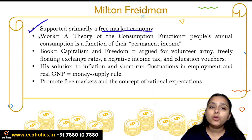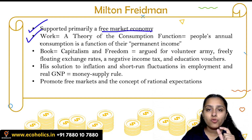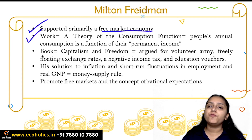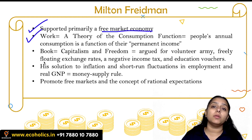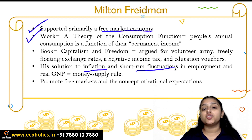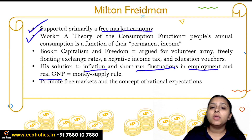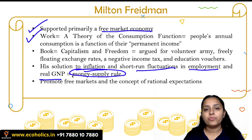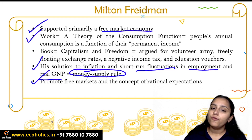Milton Friedman always supported a free market economy. According to him, consumption is a function of people's permanent income — unlike Keynesians, who said consumption is a function of present nominal income. Friedman gave the Permanent Income Hypothesis for studying consumption theories. He also argued that whenever there are short-run fluctuations in employment or output, money supply should be adjusted to remove those problems.